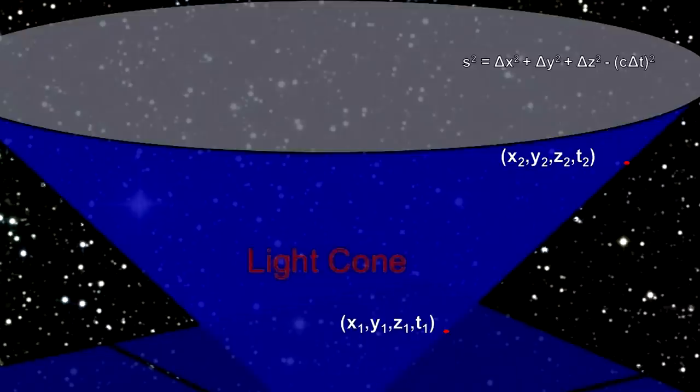At the speed of light, the lines connecting the events run up the edge of the cone, and the four-dimensional length of the line connecting these events, proper time, is zero. Cause and effect can still hold.